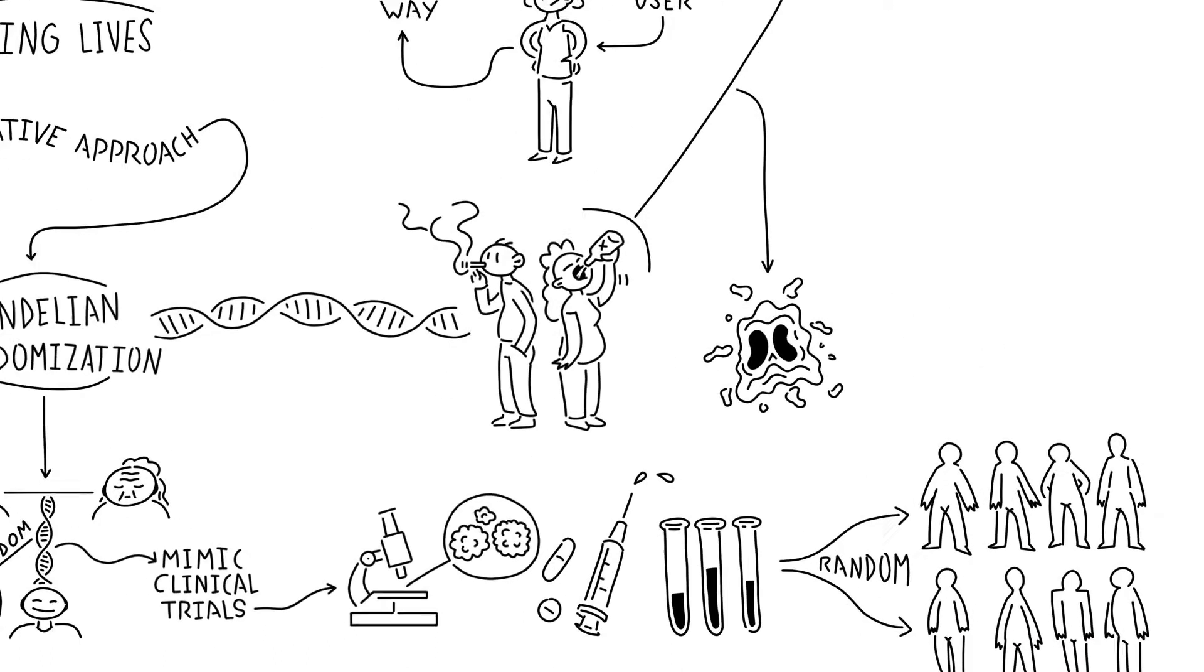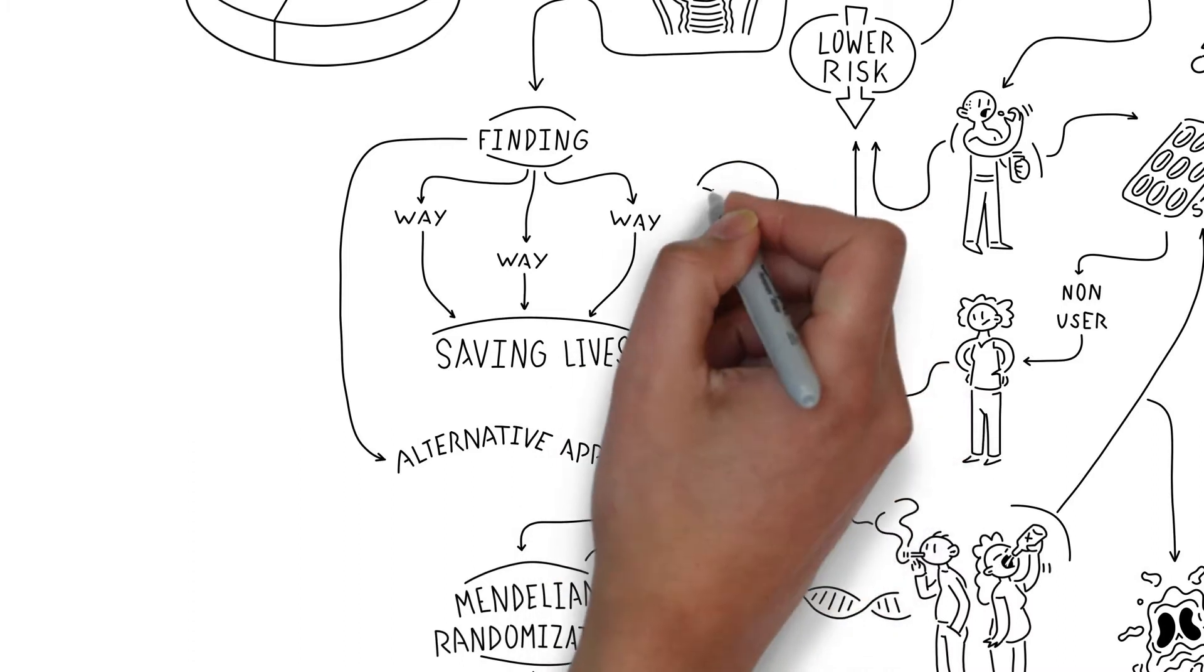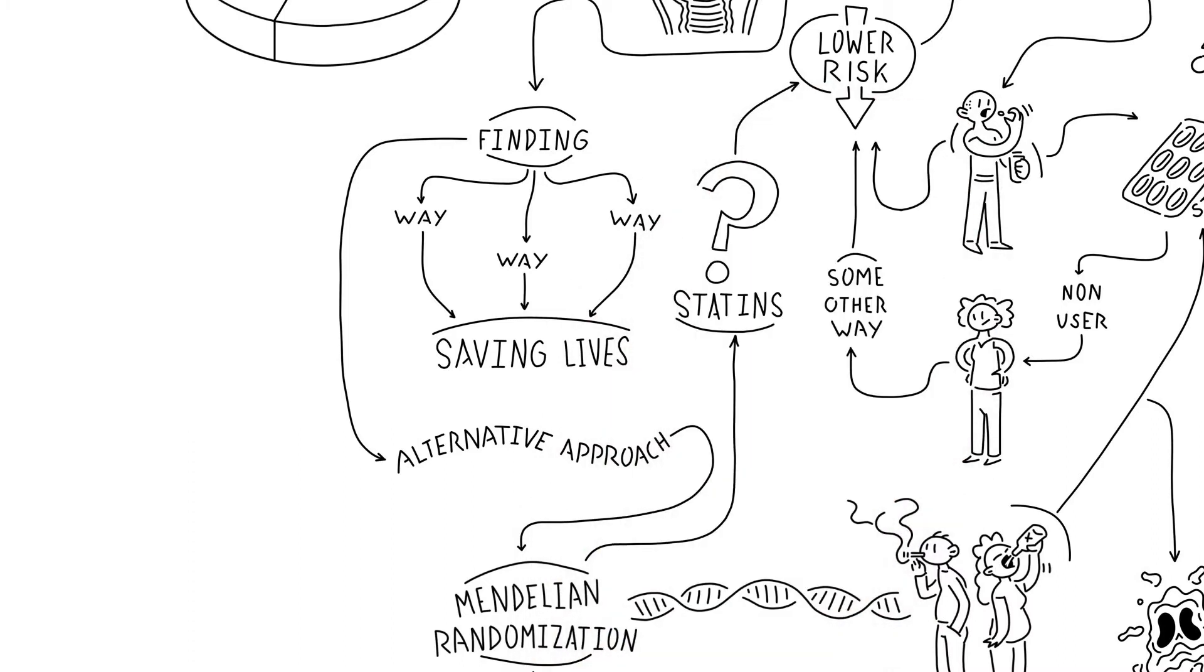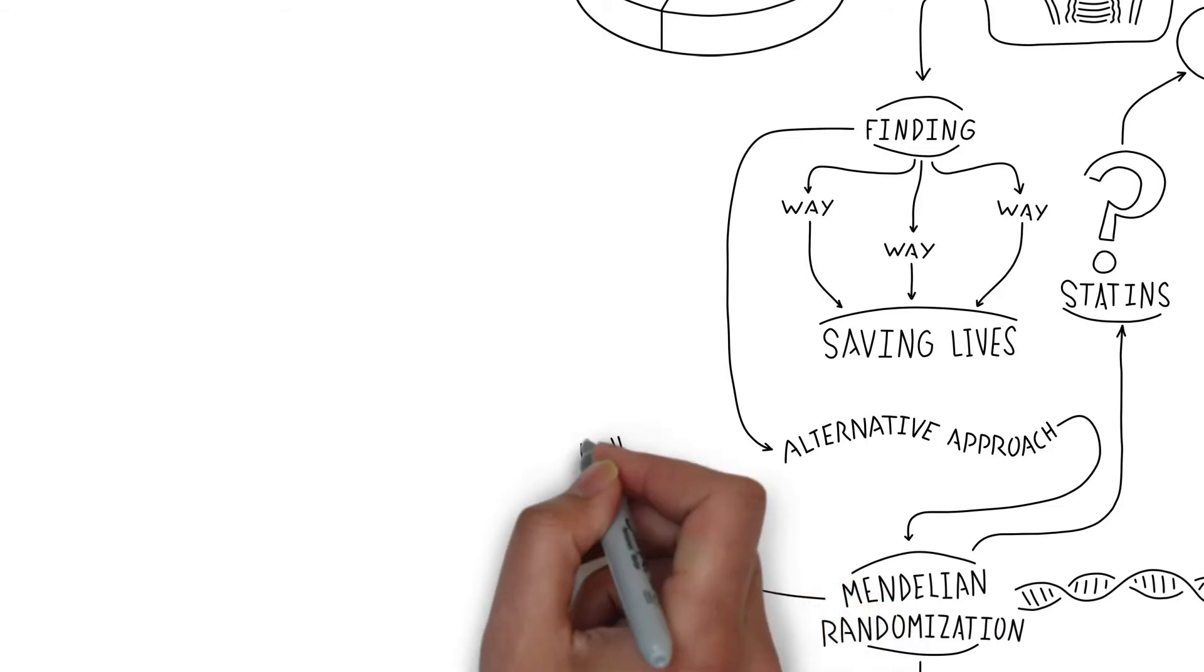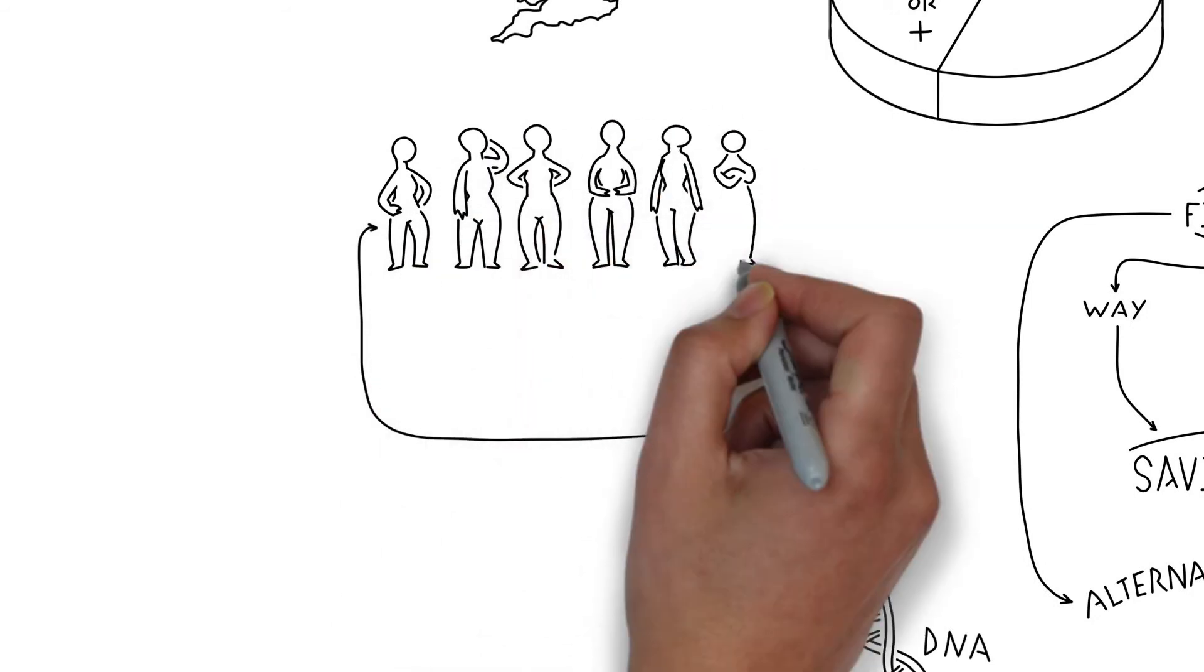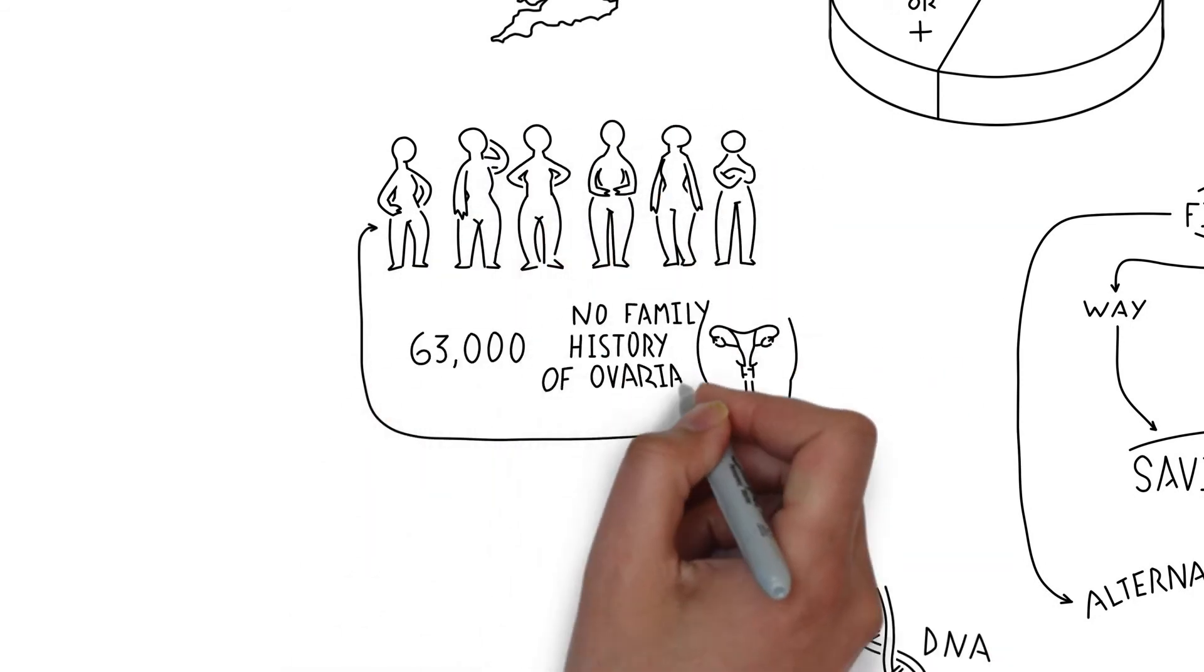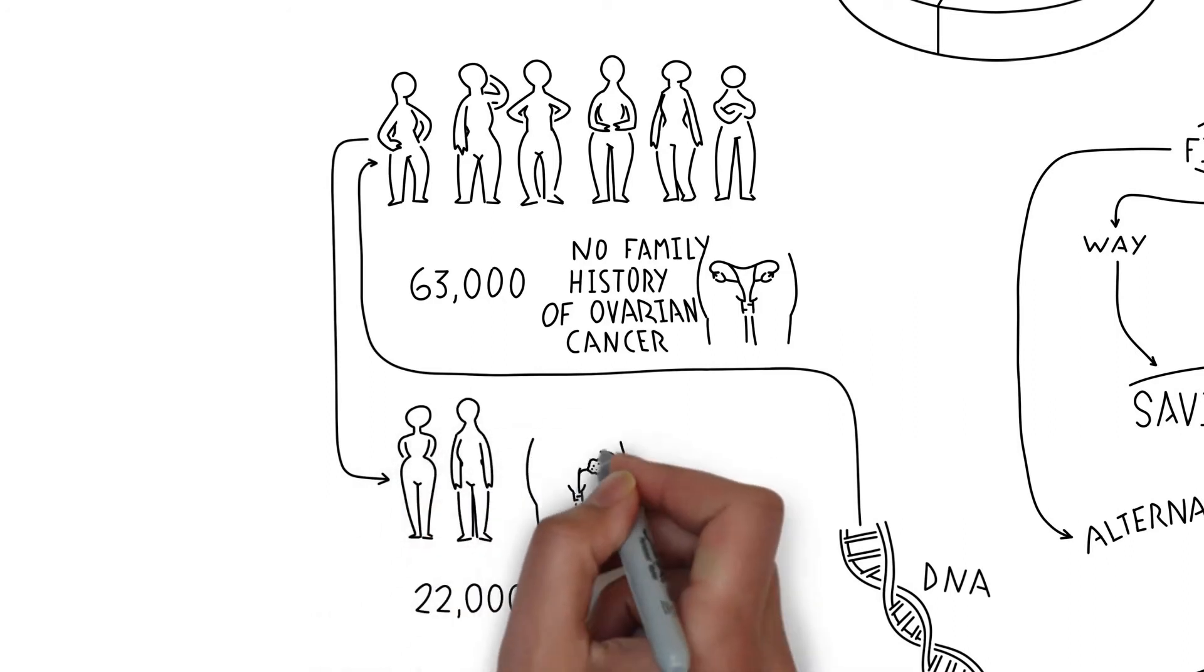We used Mendelian randomisation to examine whether statins lower ovarian cancer risk. To do this we looked at the DNA of more than 63,000 women with no clear family history of ovarian cancer, including around 22,000 with the disease.